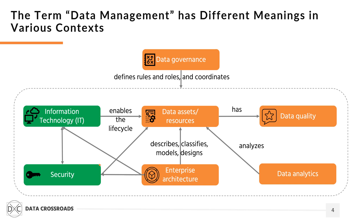Data has such a feature as quality, so we have a data quality capability. Enterprise architecture describes, classifies, models, and designs data assets. Usually we recognize four types of enterprise architecture. Data and application architecture are joint capabilities between data management and enterprise architecture. An information technology capability manages IT assets and enables the data life cycle. A security capability ensures the security of data and IT assets. Enterprise architecture also designs IT resources. You see that some blocks are colored orange.